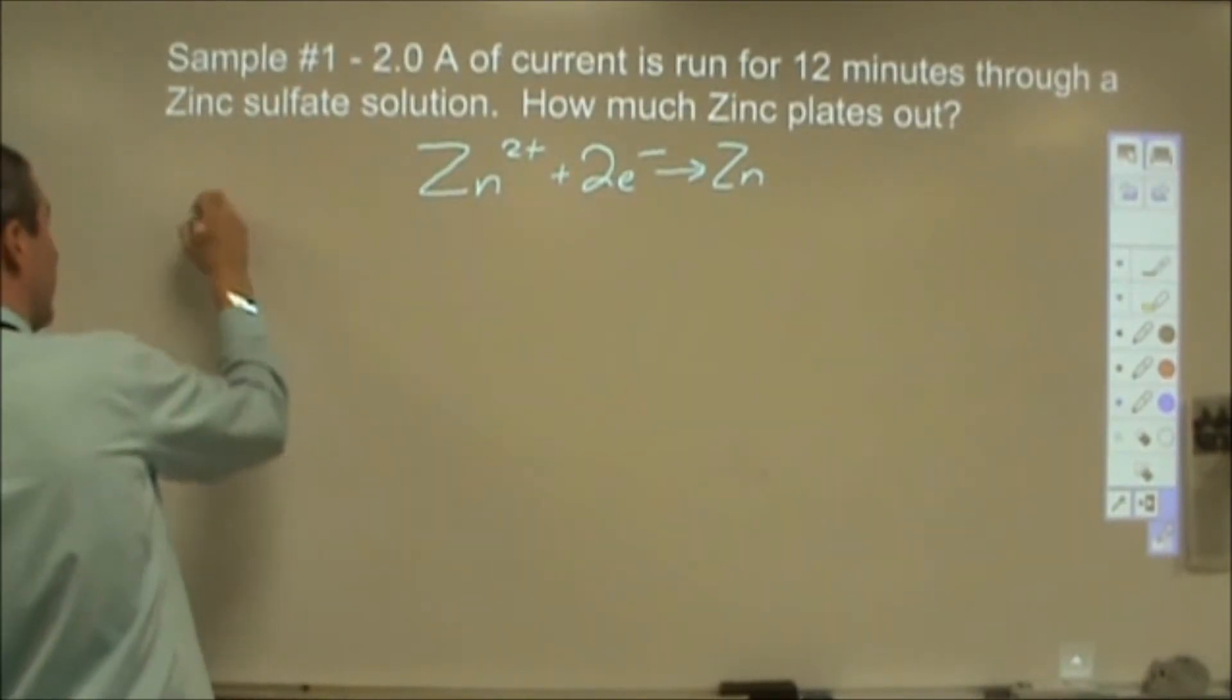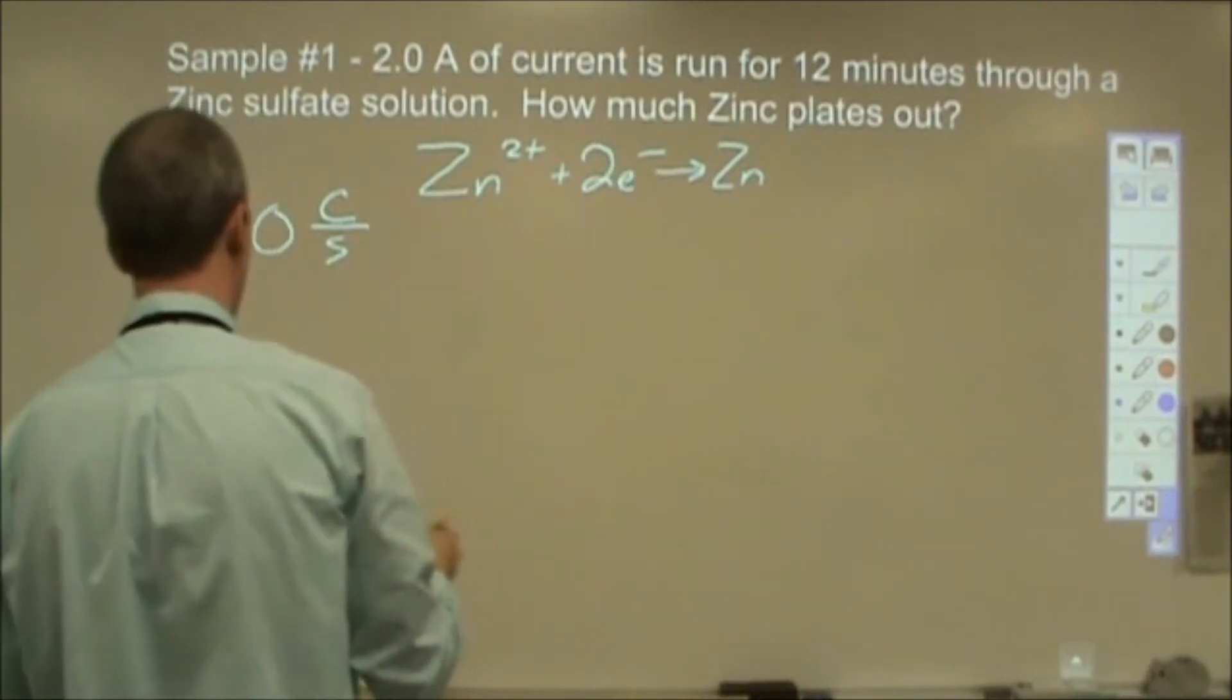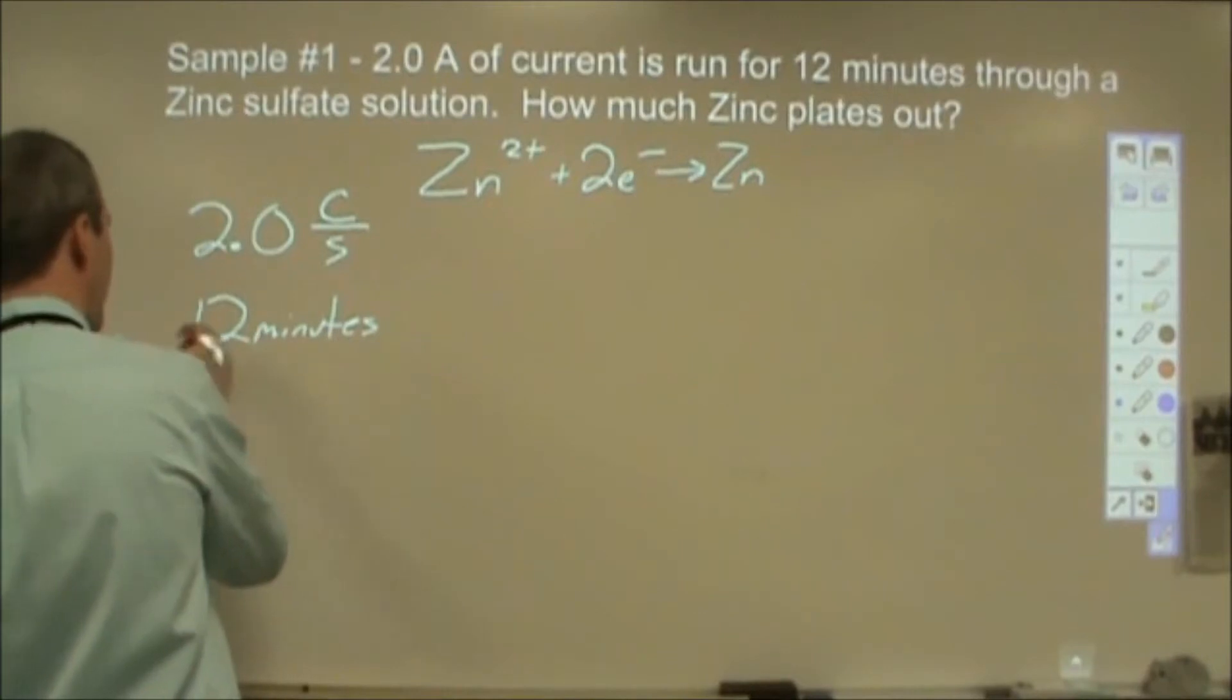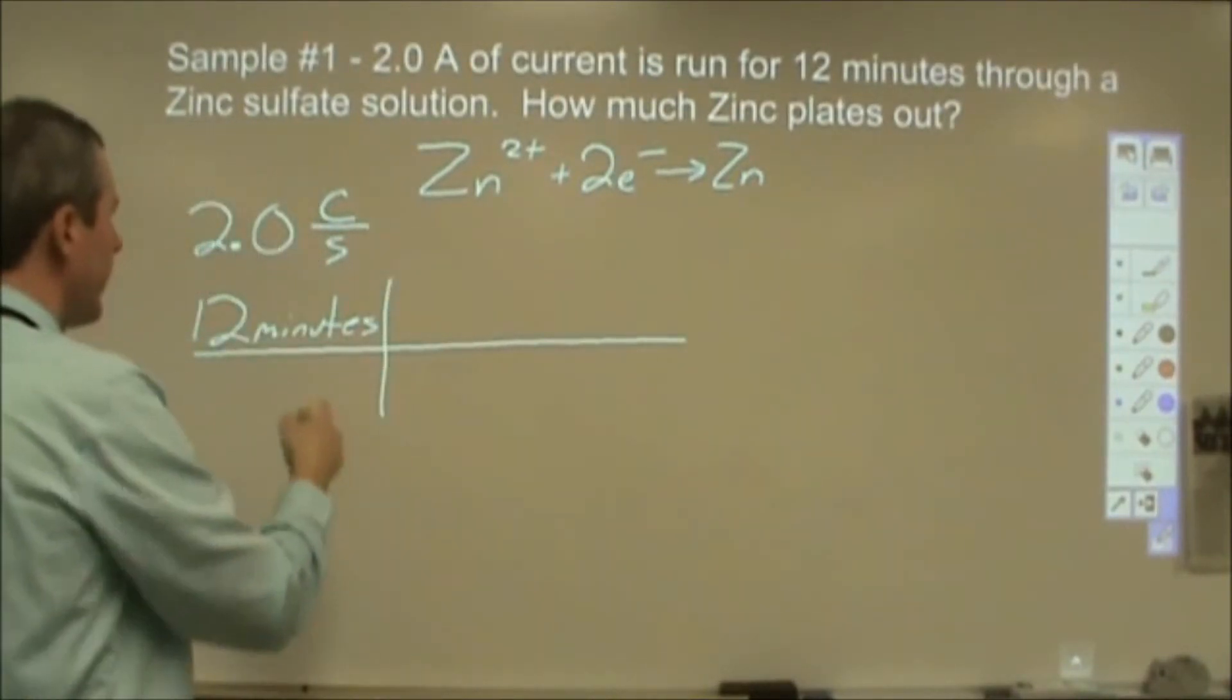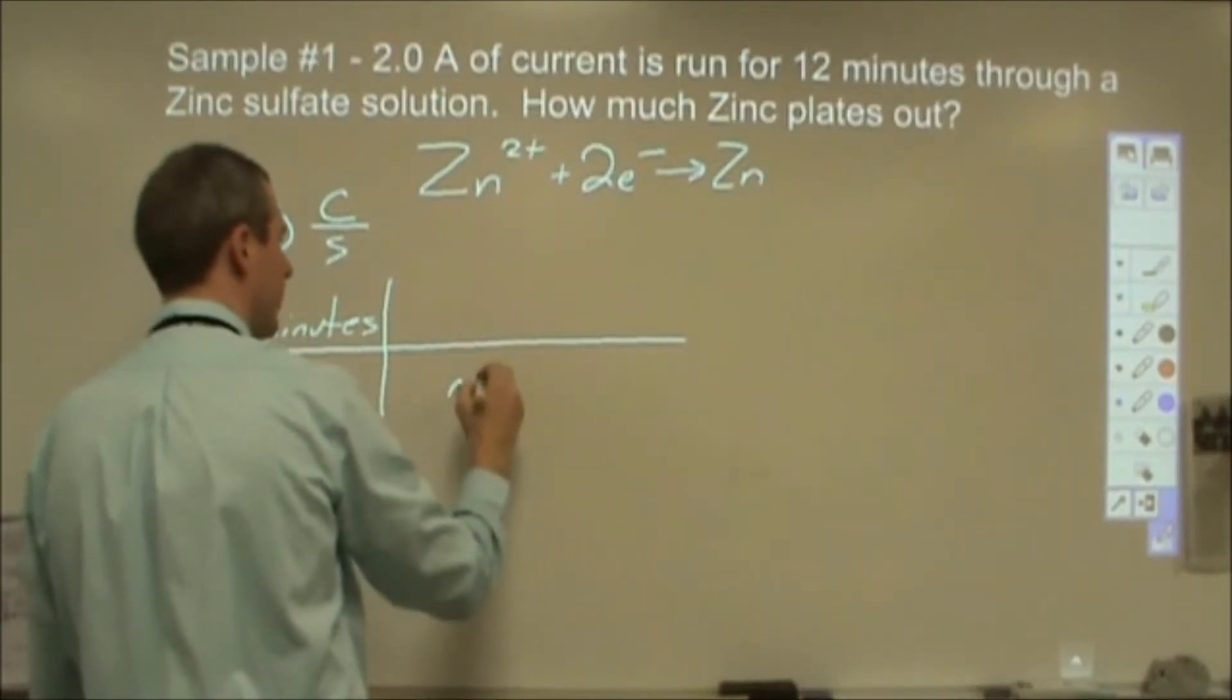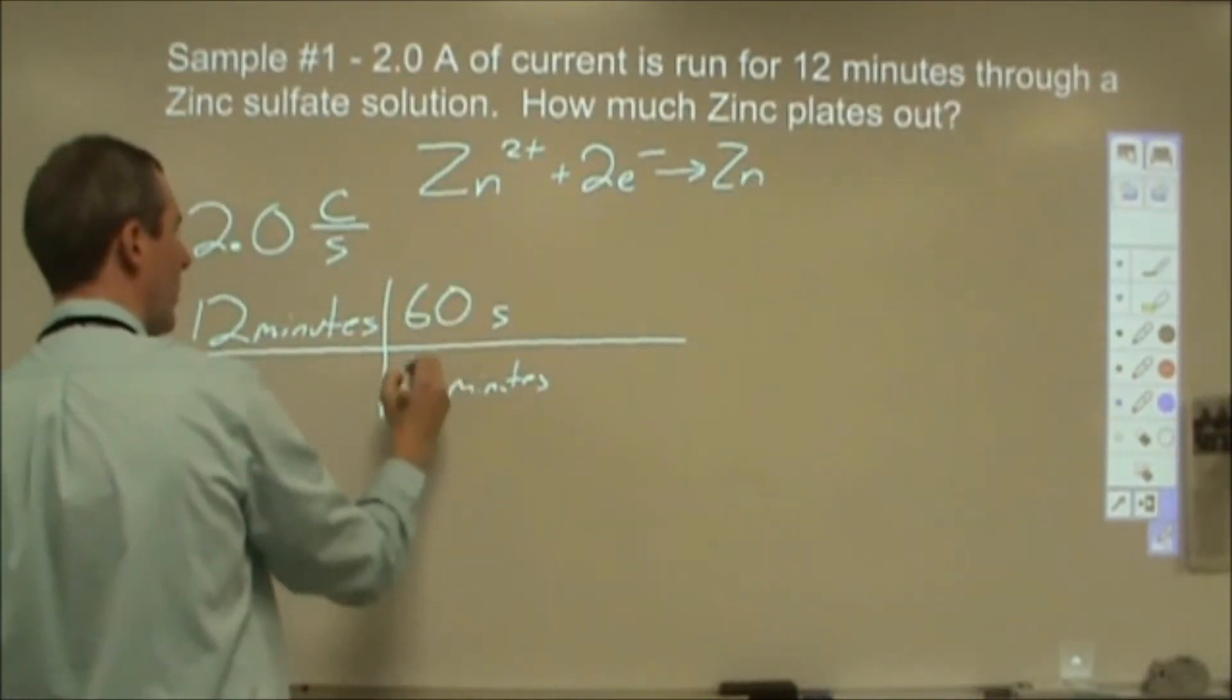Now the 2 amps. We're going to rewrite 2 amps as 2 coulombs per second. 12 minutes is our starting point. So we're going to start with 12 minutes as our given. We're going to be using this with those 12 minutes. Now I want to get the time into seconds to match my units here. So I'm going to change minutes to seconds, 60 seconds into 1 minute.